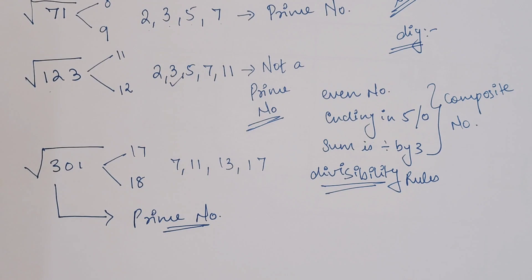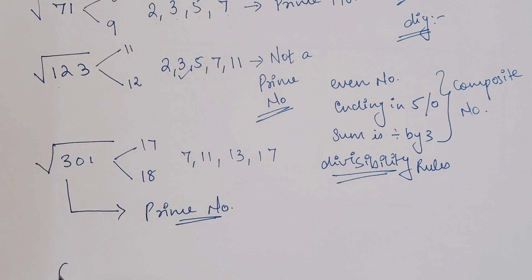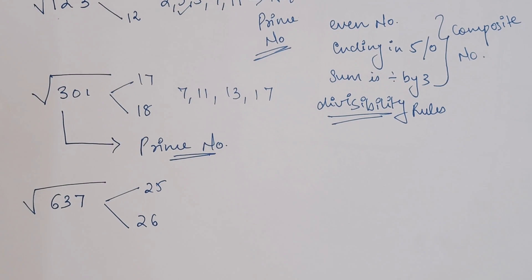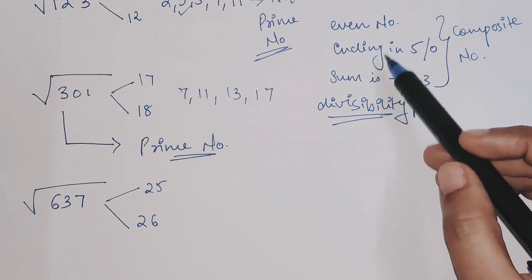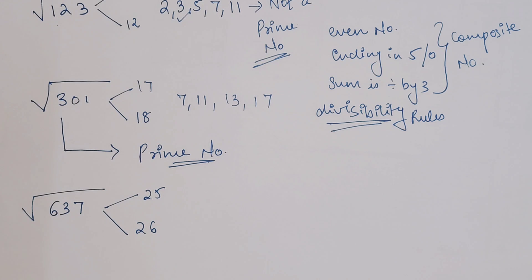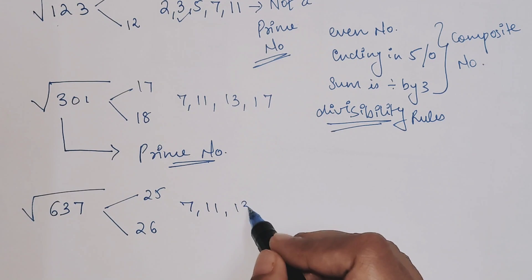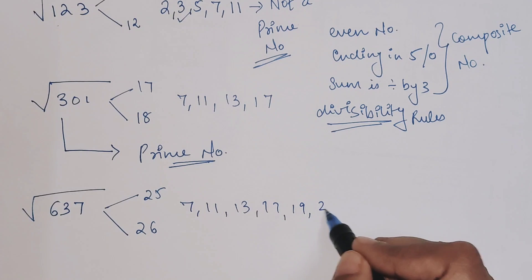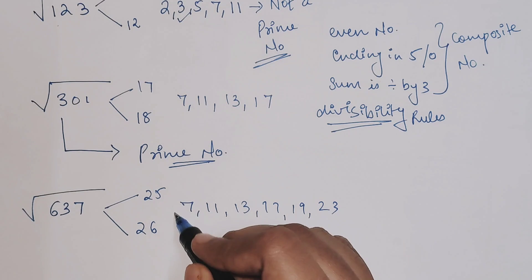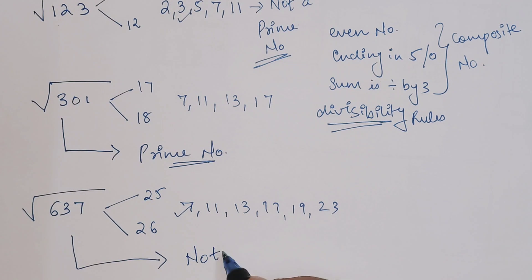Let's take another number: 637. The square root is lying between 25 and 26 because 25 squared is 625. We'll check: it's not even, not ending in 5, not divisible by 3 because the sum is 16. Now we'll check for 7, 11, 13, 17, 19, 23. When you check for 7, you can divide this completely by 7 and the answer is 91. So this is divisible, meaning this particular number is not a prime number.